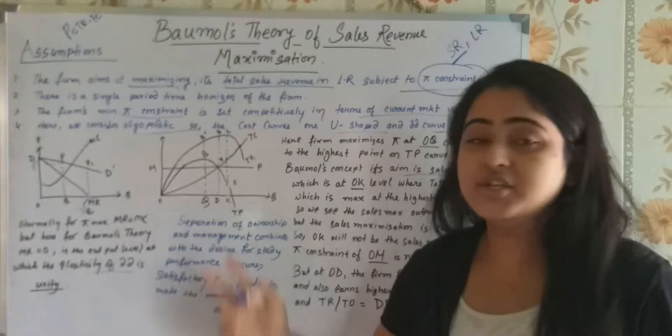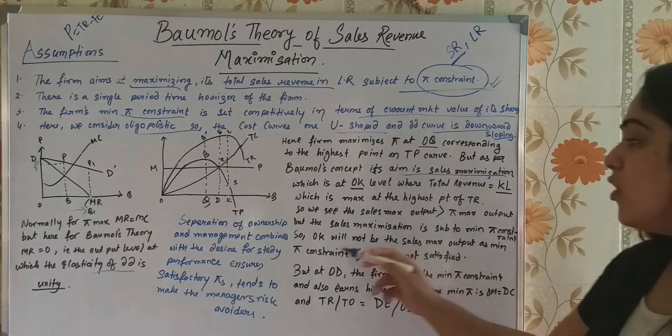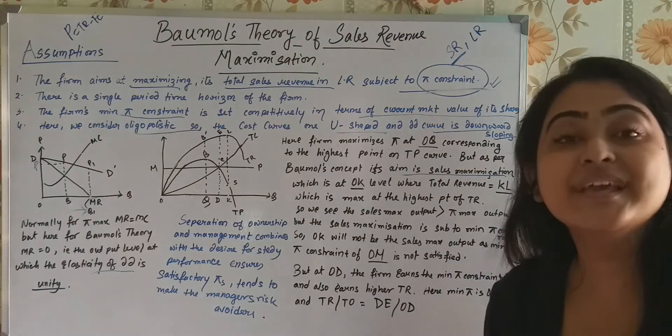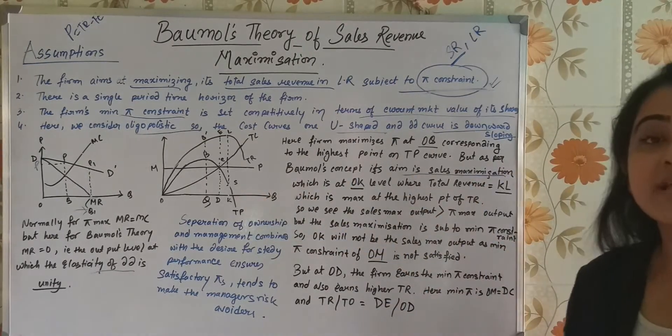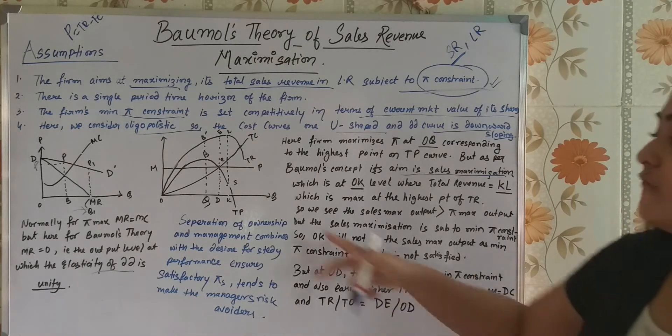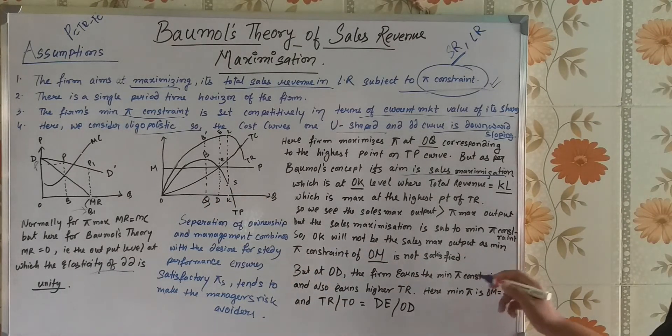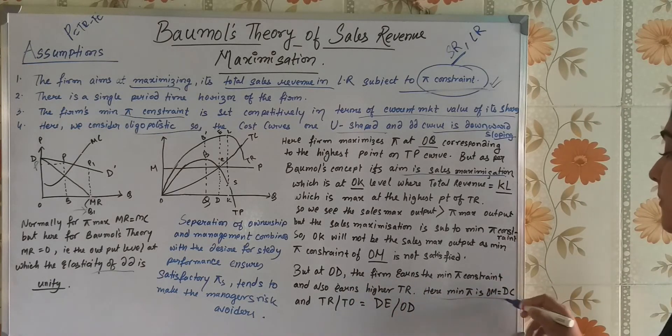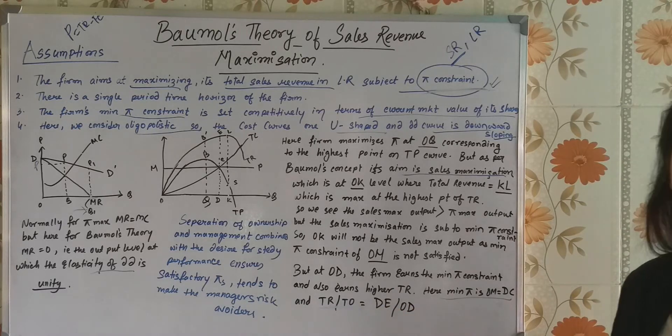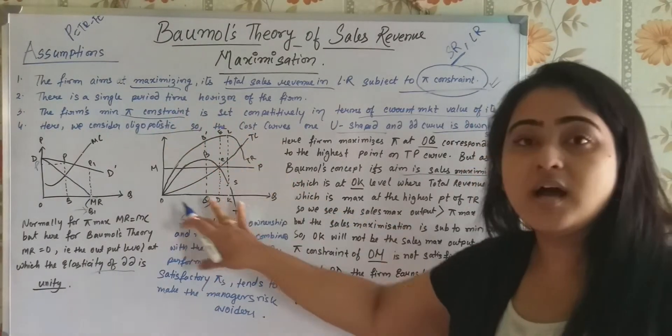Here sales maximization output, that is OK, where total revenue is maximum at the highest point of TR. You'll see, sales maximization output that is OK, is greater than the profit maximization output, that is OQ. OQ we cannot produce now because minimum profit constraint is not satisfied. How much is the profit? It's just KS. So, we cannot produce. OK will not be the sales maximization output as minimum profit constraint of OM is not satisfied. But if we produce OD output, the firm earns the minimum profit constraint and also earns higher TR. Here, minimum profit OM equals to DC is satisfied. And what is TR? That is DE by OD. So, this was the concept of the diagram.